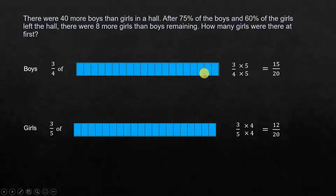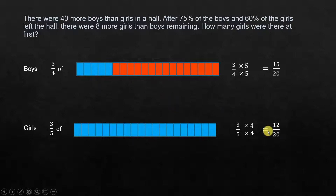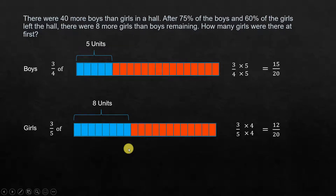Out of 20 units for boys, 75% — which is 15 units — left, leaving 5 remaining units. Similarly for girls, 12 units left, leaving 8 remaining units. So for the unknown quantity, we are left with 5 units for boys and 8 units for girls.